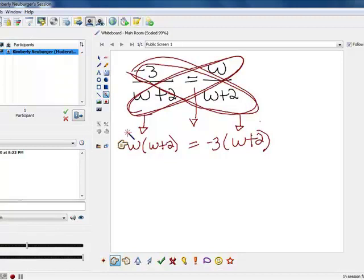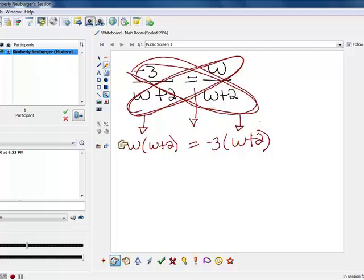However, this particular one, multiplying by w plus 2, would just eliminate it. We'll do one more like this, but that's not quite the case. So what we're going to do now is we've eliminated our fractions by cross multiplying, so we'll simplify and solve.